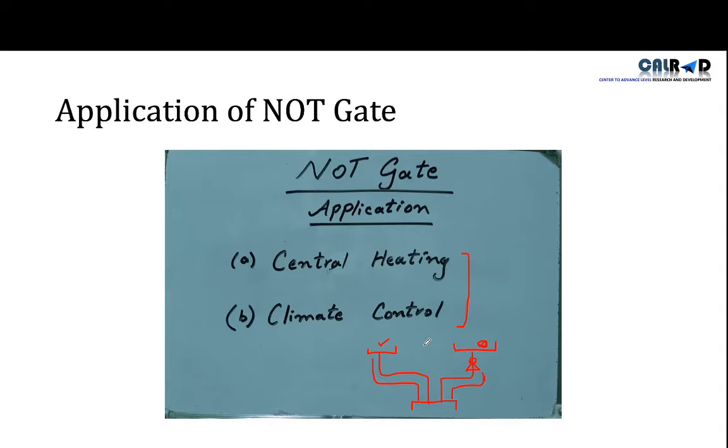For example, in climate control, sometimes we want to turn air condition, sometimes we want to control heated system depending on the temperature. So in order to switch between systems, we use NOT gate. Because if one system is on, then another system will remain shut down.